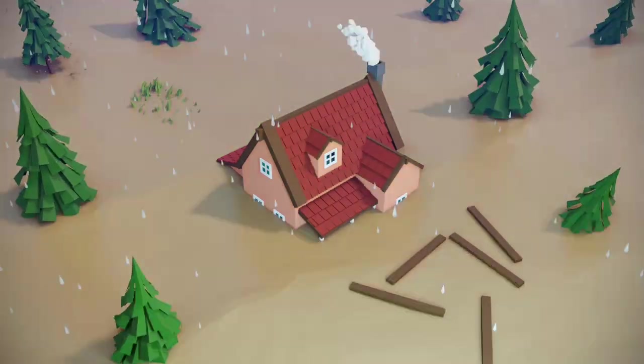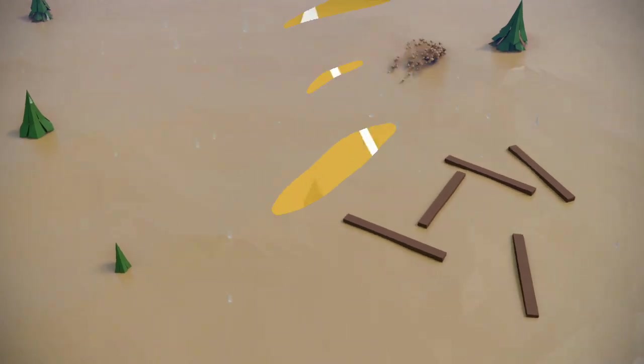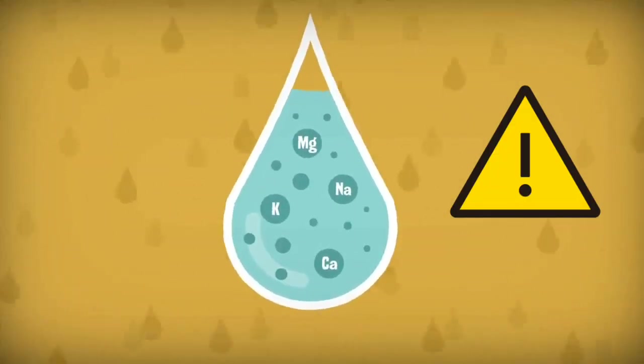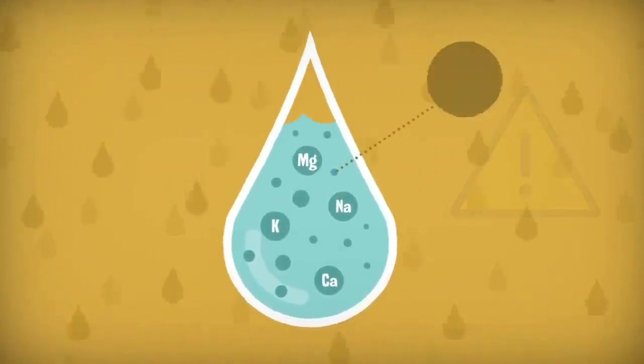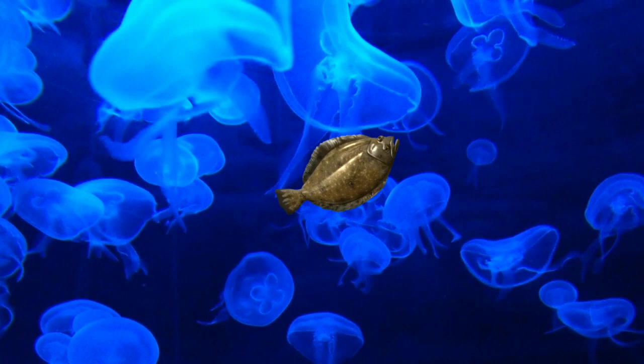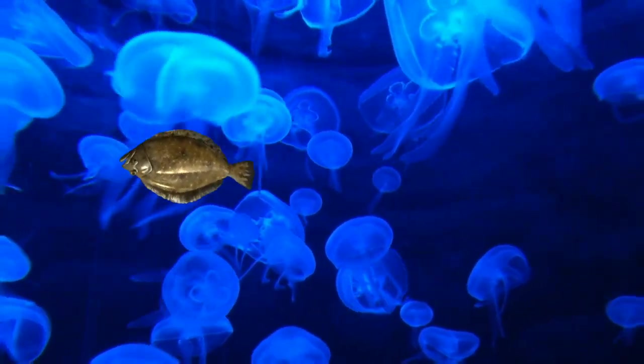Acid rain has many ecological effects, especially on lakes, streams, wetlands, and other aquatic environments. Acid rain makes such waters more acidic, which results in more aluminum absorption from soil which is carried into the lakes and streams. That combination makes water toxic to crayfish, clams, fish, and other aquatic animals.